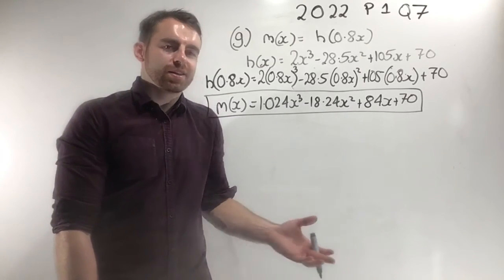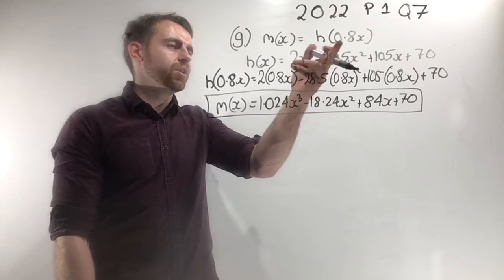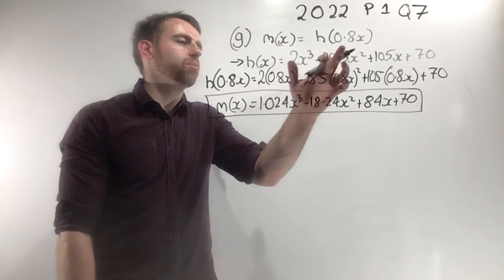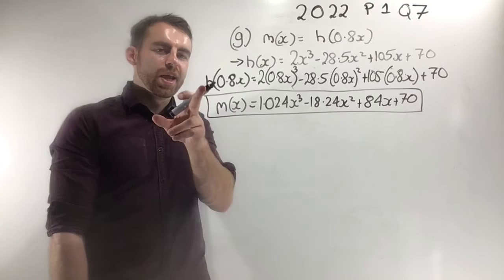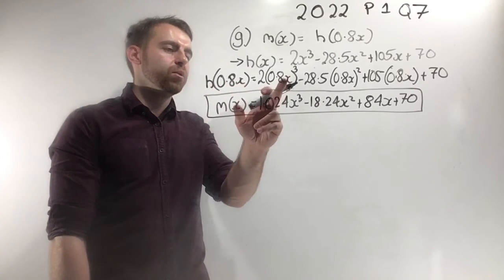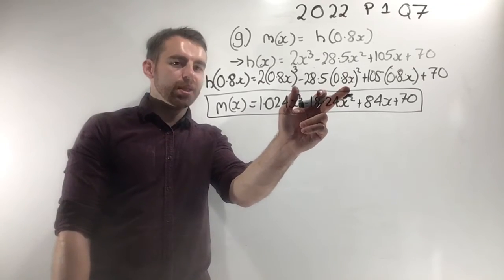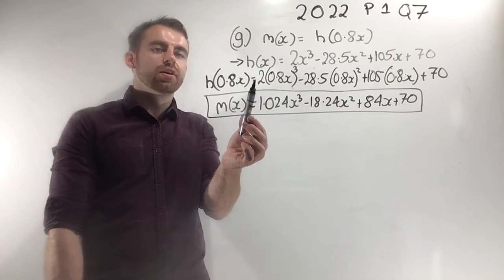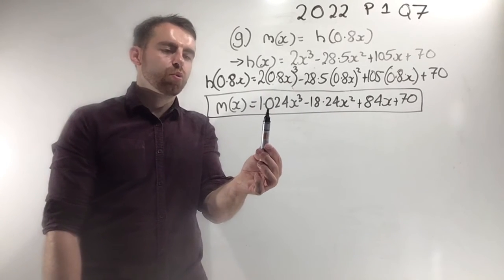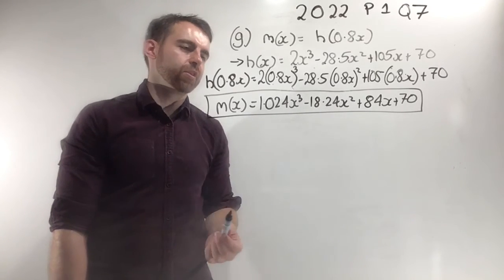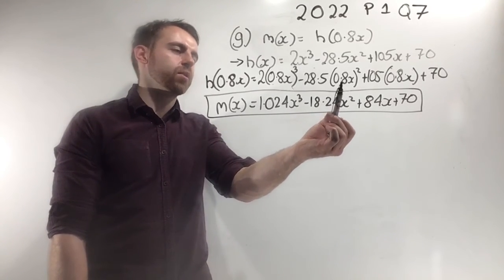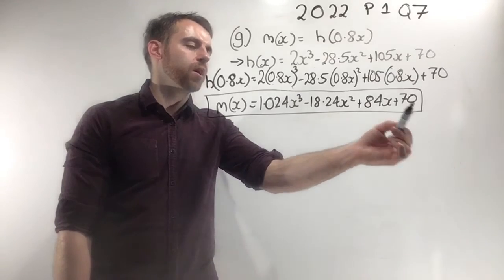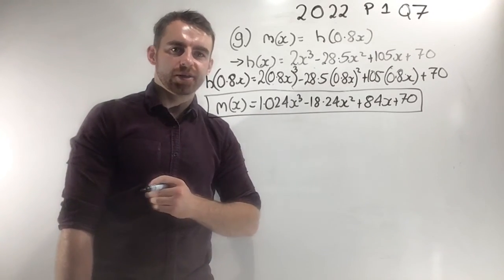In part g, Martha's heart rate is given by m(x) equals h(0.8x). We've been working with h(x) all along, so we simply substitute 0.8x in place of x. This gives 0.8x cubed, 0.8x squared, and 0.8x for each term respectively. Plugging into the calculator: 2 times (0.8)³ gives 1.024x³, minus 28.5 times (0.8)² gives the second term, and 105 times 0.8 gives 84x. So that's our final answer for m(x).